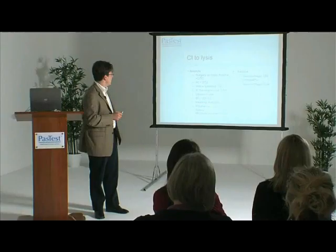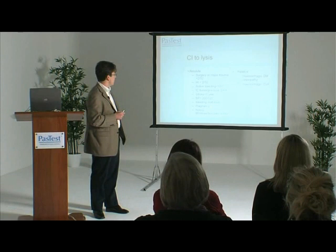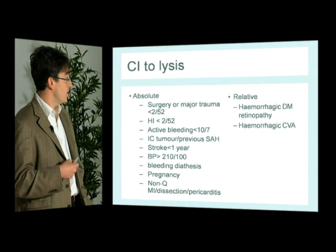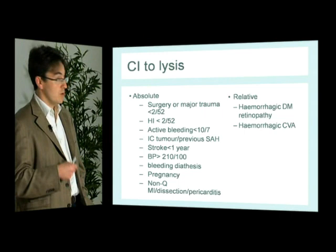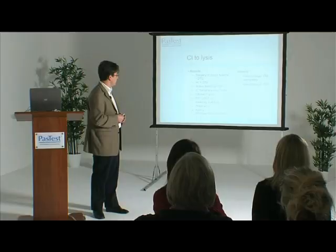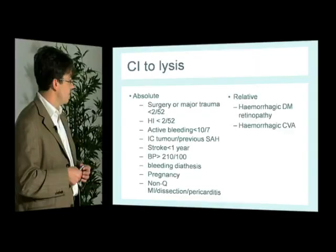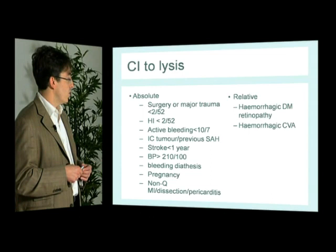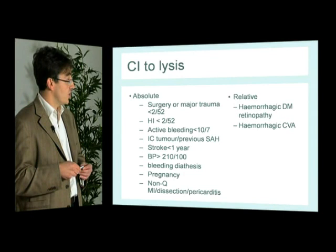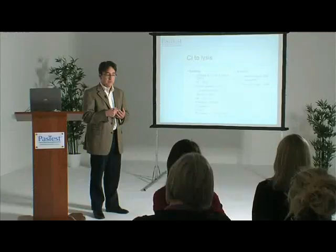Contraindications to thrombolysis include: surgery or major trauma; head injury less than two weeks preceding the episode; active bleeding less than ten days before; intracranial tumour or previous subarachnoid haemorrhage; recent stroke of less than a year; blood pressure above 210 over 100 mmHg; bleeding abnormalities; pregnancy due to the high vascularisation of the placenta making haemorrhage a major risk; and conditions such as dissection, pericarditis or a non-ST elevation infarct. Relative contraindications include haemorrhagic diabetic retinopathy and haemorrhagic stroke. In coming years this list will be referred to less as primary PCI is offered to more patients.